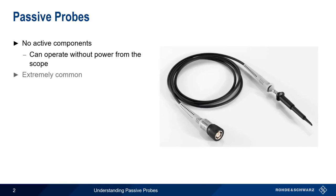Passive probes are extremely common, and a set of passive probes is usually included with every oscilloscope, from hobbyist to high-end. In fact, passive probes are often interchangeable between scopes, even scopes from different manufacturers, although they will have different performance and other characteristics.